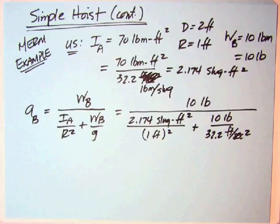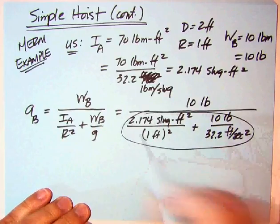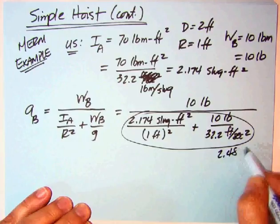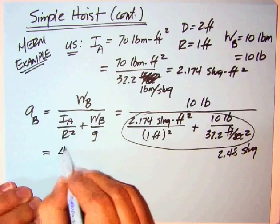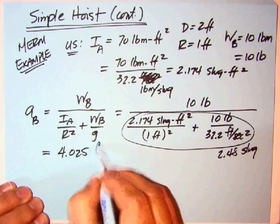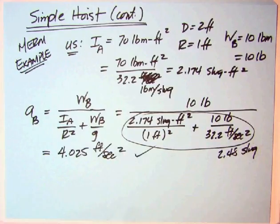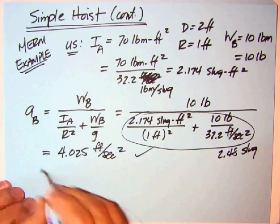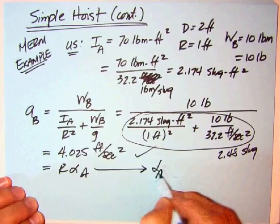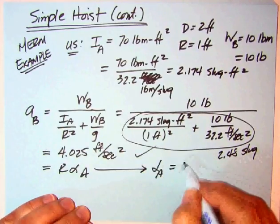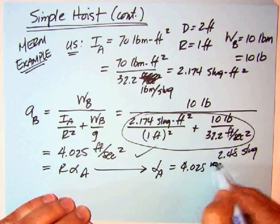Taking the equation we had for A sub B, put in 10 pounds in the numerator, our 2.174 slug foot squared divided by 1 foot squared, the 10 pounds again by 32.2. Both of these are slug terms and you get at least two decimal places, 2.48 slug. Divide that into 10 pounds and get 4.025 feet per second squared, which is what the MERM got.